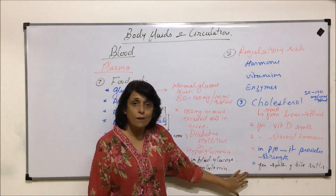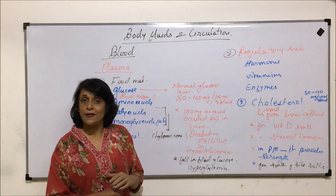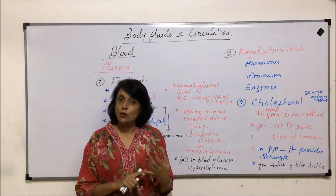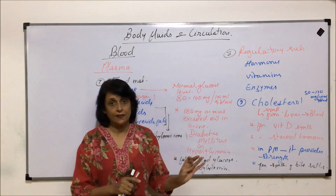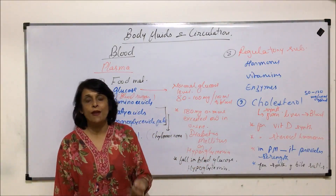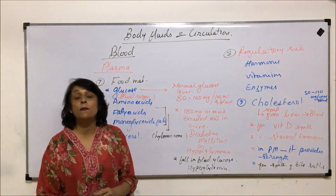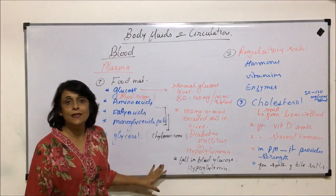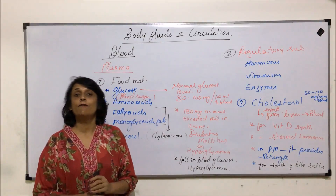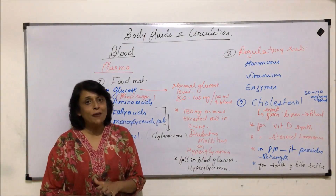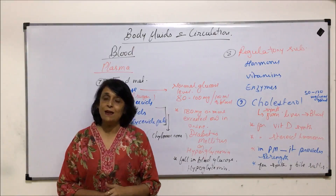So now we have seen what all things are present in plasma. Though it is mainly water, it also has inorganic substances, proteins classified into various categories, and other things including food material, waste, hormones, vitamins, cholesterol, and antibodies. This is what is present in plasma, and from the next segment we will start with the corpuscles — RBCs, WBCs, and platelets.